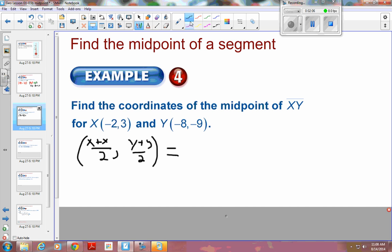So this is my x. This is my x. So this is going to be negative 2 plus negative 8. And then I'm going to divide that by 2. And then this is my y, and this is my y. So that's 3 plus negative 9. And I'm going to divide that by 2.